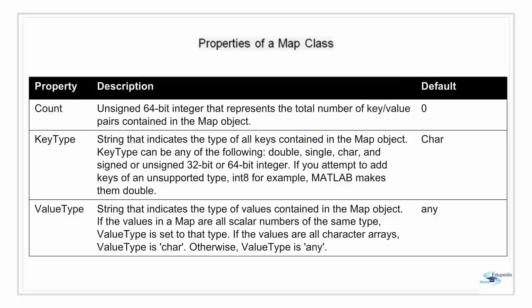KeyType is a string property that indicates the type of all the keys contained in the map object. This can be double, single, character, or signed or unsigned integer. If we attempt to add unsupported key types like integer eight, MATLAB converts them to double. The third property is ValueType, which is also a string indicating the type of values in the map object. If all values are of the same scalar type, ValueType is set to that type; for example, if all values are character, it becomes character. Otherwise it remains of type any, which is also its default.